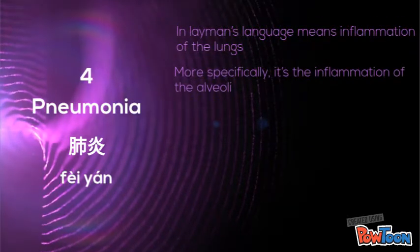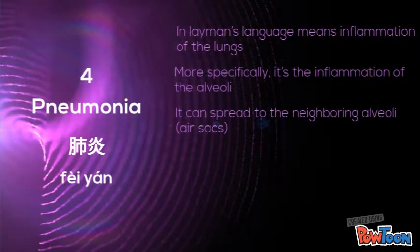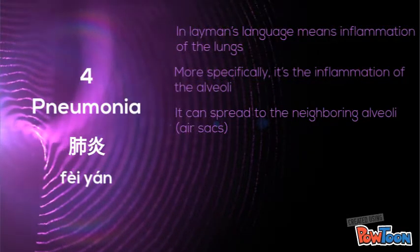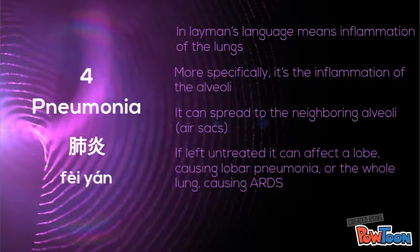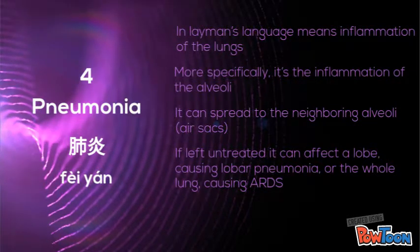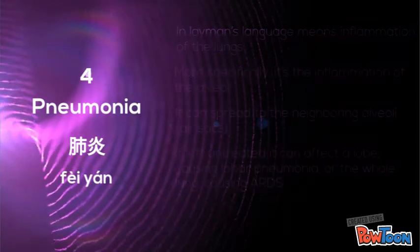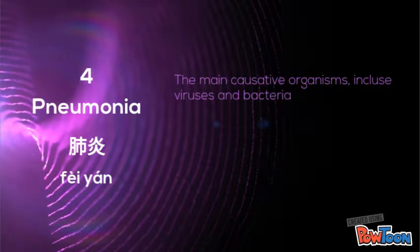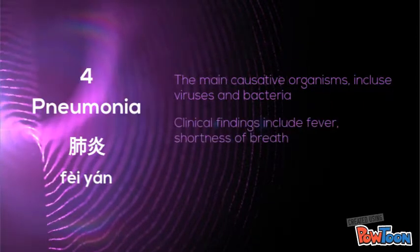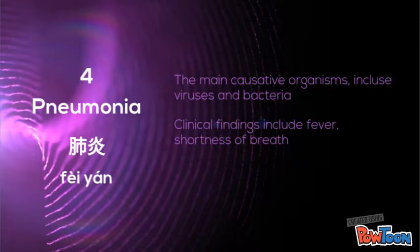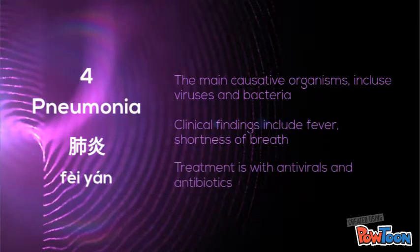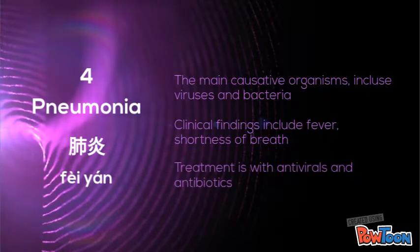Pneumonia is inflammation of the lungs. It can spread to the neighboring alveoli through pores in the air sacs. If left untreated, it can affect a lobe — lobar pneumonia — or the whole lung, causing ARDS. The main pathogens are viruses, rhinoviruses and bacteria. Clinical signs include productive cough, fever, and shortness of breath. Treatment is with antivirals and antibiotics.